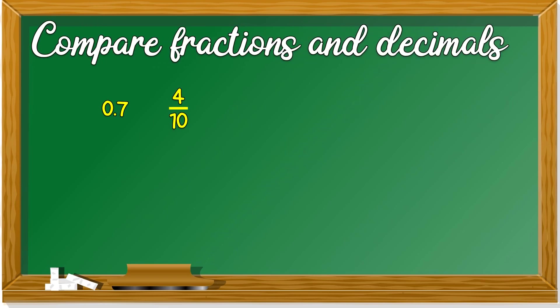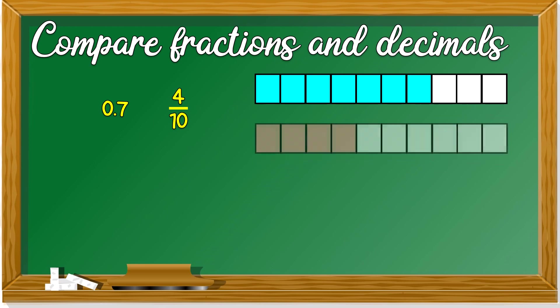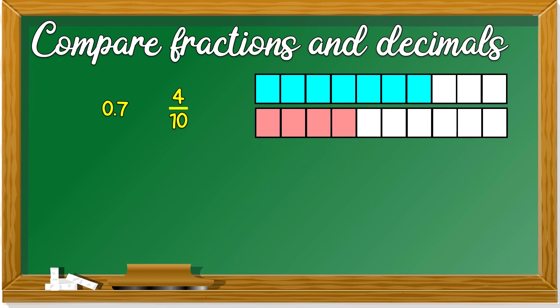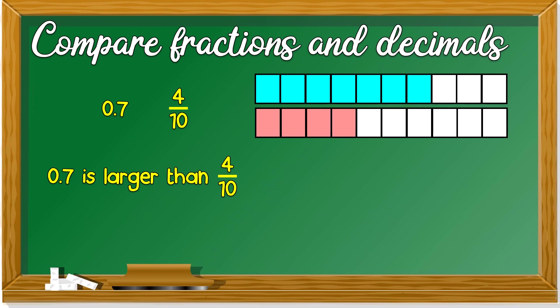It's easy to compare decimals, right? Are you good at it? Good. Now we are going to compare fractions and decimals. What if I give you this: 0.7 and 4 over 10? If we look at the diagram, this diagram represents 0.7, and this one represents 4 over 10. It's obvious which one is larger, right? So, 0.7 is larger than 4 over 10. Or we can say 0.7 is more than 4 over 10.